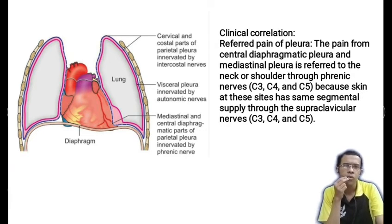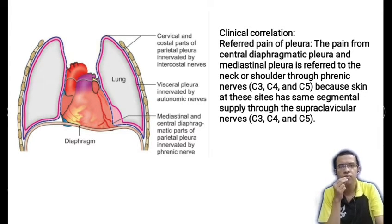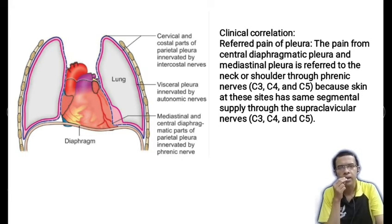Referred pain of pleura: the pain from the central diaphragmatic pleura and mediastinal pleura is referred to the neck or the shoulder through the phrenic nerve (C3, C4, C5), because the skin at the shoulder has the same segmental supply via the supraclavicular nerve, which has the same root value as the phrenic nerve — C3, C4, and C5.